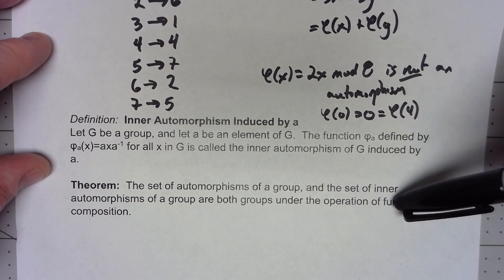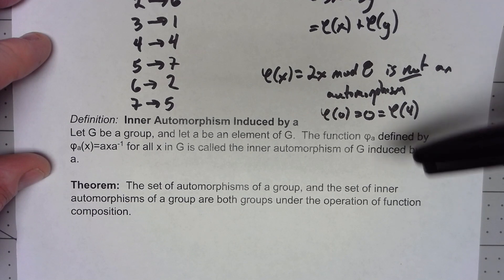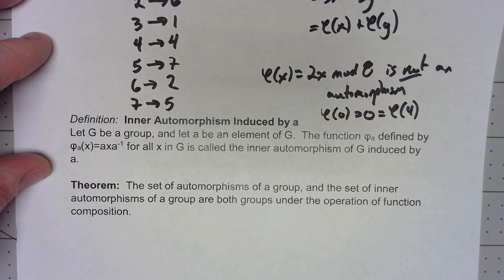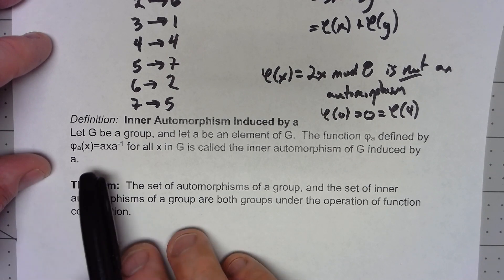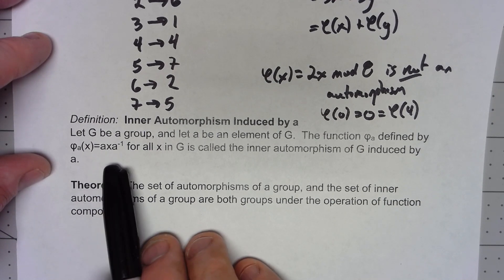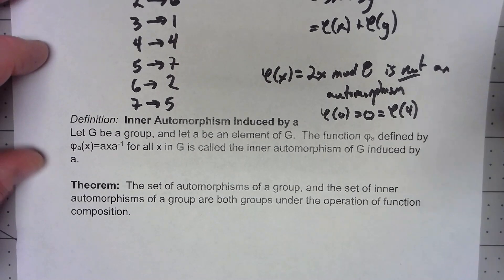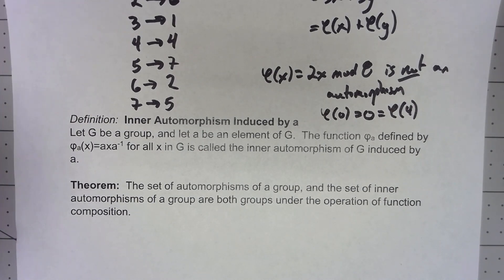Now it's worth noting that if you have an abelian group, the only inner automorphism is the identity. Because if you've got an abelian group and you do x, a, x inverse, you can flip the x and the a inverse. You've got a times a inverse. So you get the e times x. Therefore, everything's mapping to itself. You're only getting the identity thing.